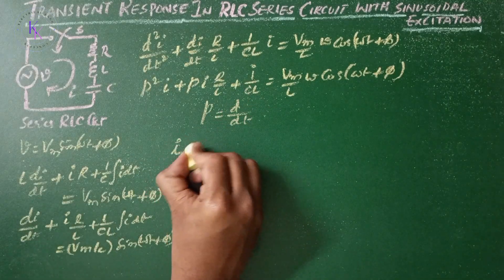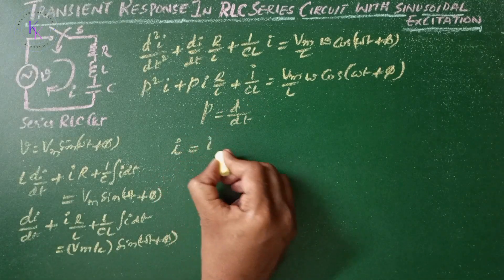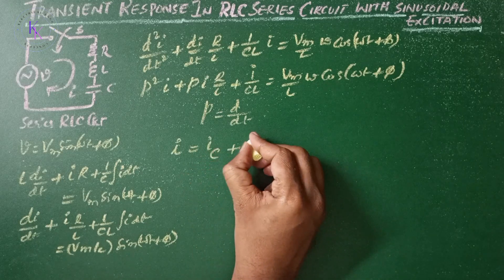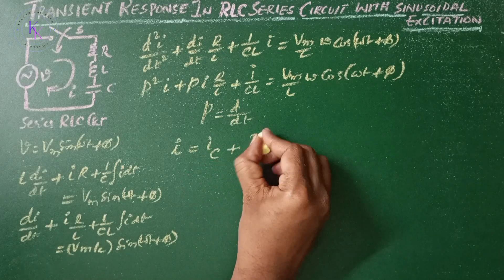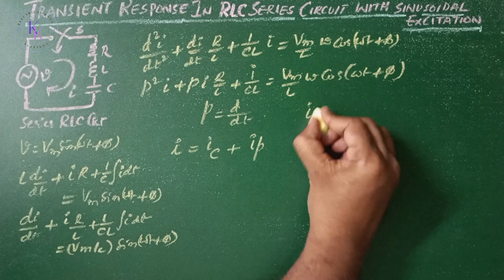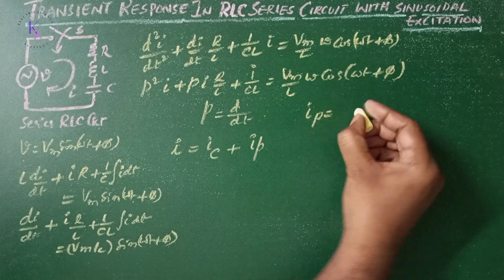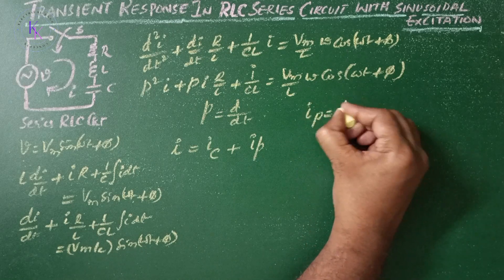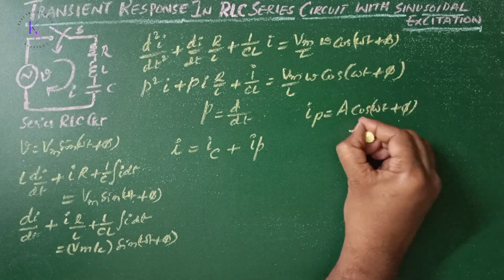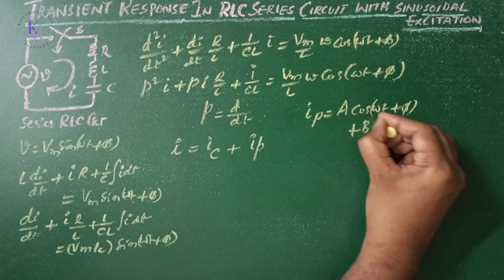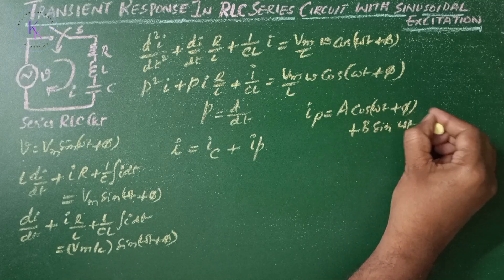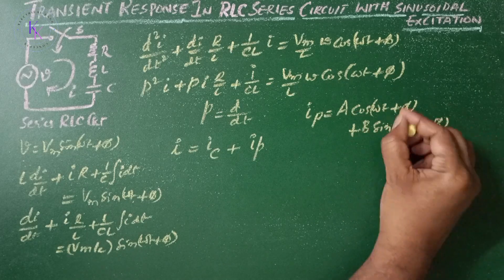The net current solution i is given by the complementary function ic plus the particular solution ip. Let us assume ip = A·cos(ωt + φ) + B·sin(ωt + φ).